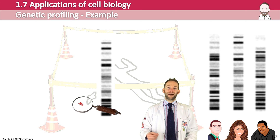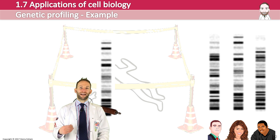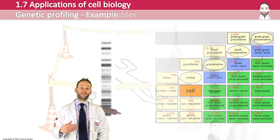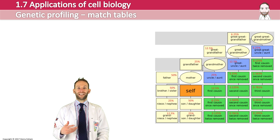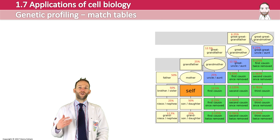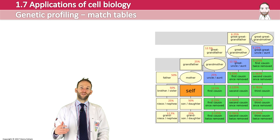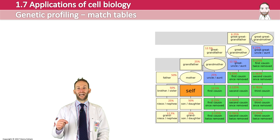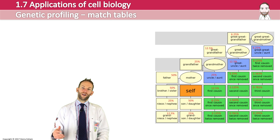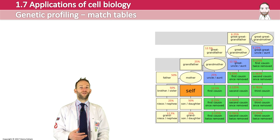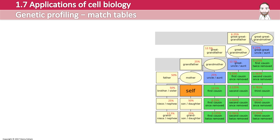The last thing to mention are things called match tables. Match tables can be used to see how much DNA you have in common with your relatives. This is quite useful to look at the percentage of DNA you'd expect to have in common with your grandfather or with your cousin, for example.